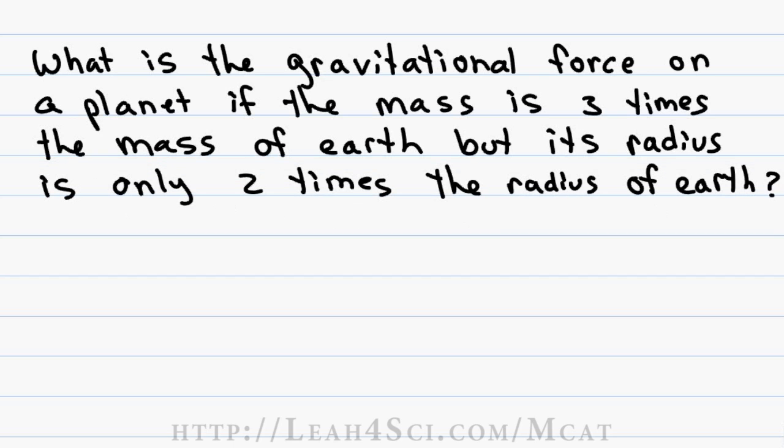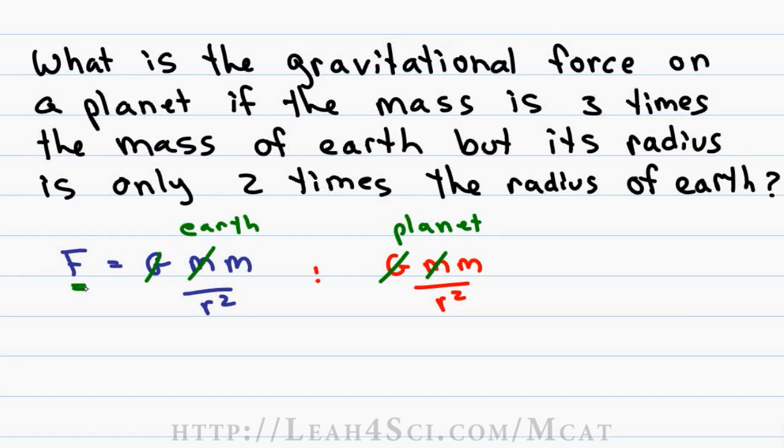The equation for gravitational force is F equals GMM over R squared where one of the M values refers to the mass of the planet, the other is the mass of an object. We want to compare the two equations, one for the force of Earth and one for the force of the planet. We have GMM over R squared and we're setting up a proportionality. Anything that shows up the same on both sides we can cross it out. The first mass refers to mass of an object, get rid of it. The G value we're not looking at so get rid of that. We're left with M over R squared. The mass of the planet is three because it's three times the one mass of Earth. The radius of the planet is two times that of the radius of Earth so our Earth is going to be one.